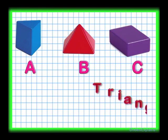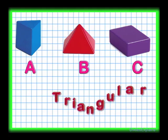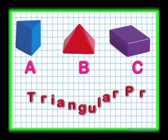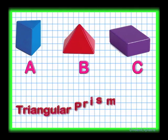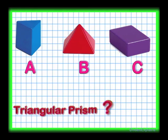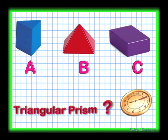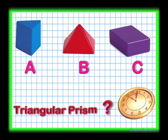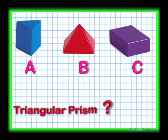A, B, and C are three different shapes. Can you tell me which one of these is a triangular prism? You'll have ten seconds to answer. What's your answer?